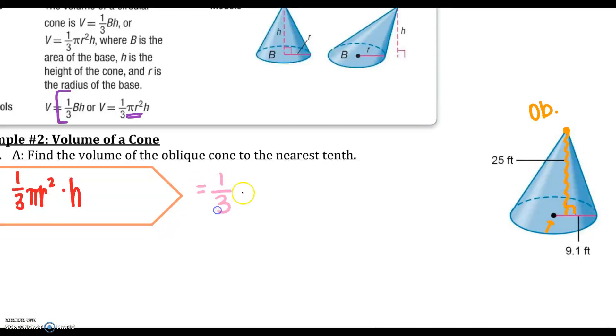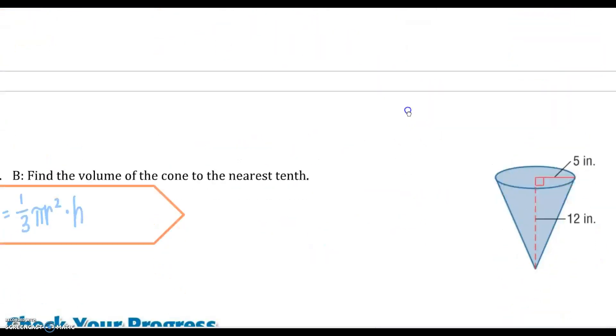For my volume, I'm going to say 1 third pi. My radius is 9.1 squared times my height, which is 25. Again, from my point perpendicular to my base. If I solve that out, I'm going to get 2,168.0 feet cubed. Let's look at the next one.